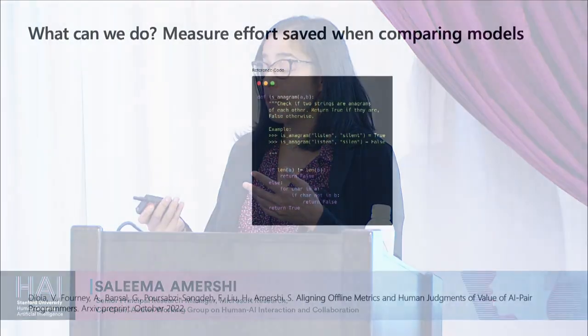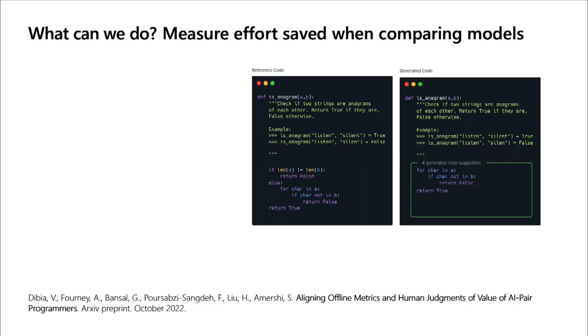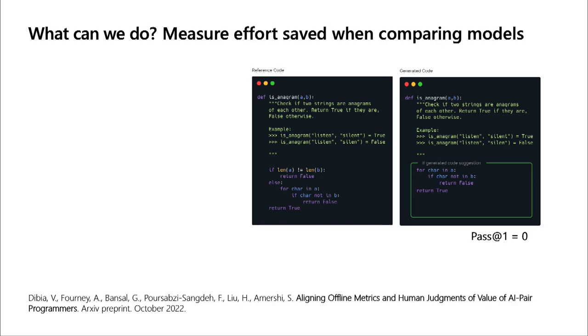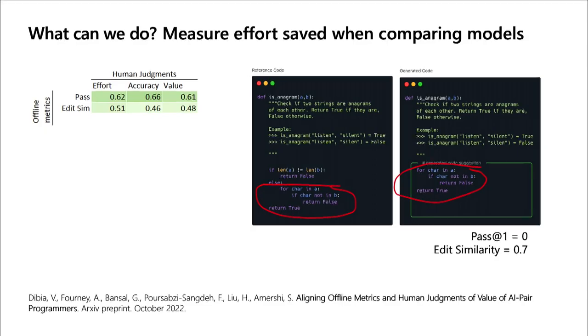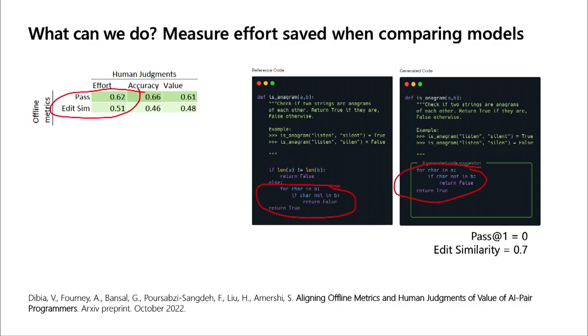We looked at other metrics: comparing ground truth code generation on the left with a model's generation on the right, the model's generation doesn't pass the unit test, but it's actually quite similar to the ground truth. We looked at edit similarity — one minus edit distance — to see if it's a good proxy for effort. It gave a Pearson correlation of about 0.51, not great, but it captures what the correctness metric misses: when pass@K fails, people still get value because it just has to be close enough.